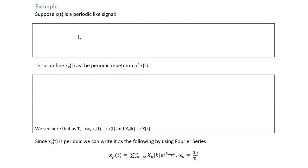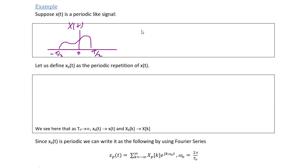Suppose x(t) is a periodic-like signal. I'm going to define x(t) to be the following arbitrary time-limited signal, where it's time-limited between negative T over 2 and positive T over 2. Time-limited means the signal does not go on to negative and positive infinity — that is, x(t) equals zero for |t| greater than T over 2.